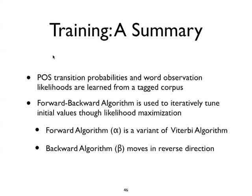Initial part-of-speech transition probabilities and word observation likelihoods are learned from a tagged corpus. The Forward-Backward Algorithm is used to iteratively tune these initial values through the method of likelihood maximization. The Forward-Backward Algorithm combines two algorithms.